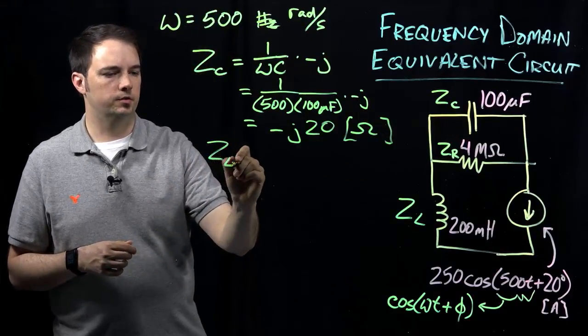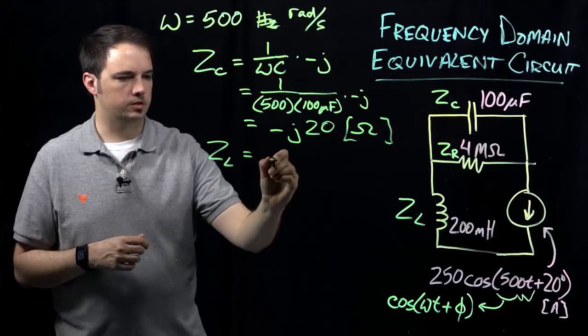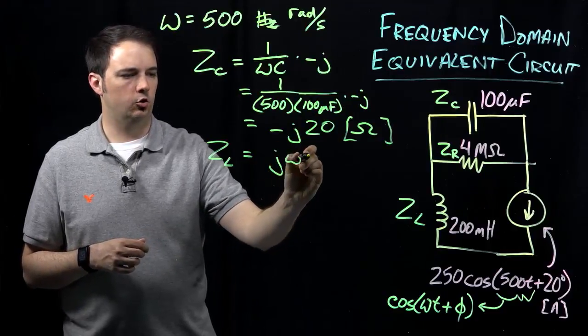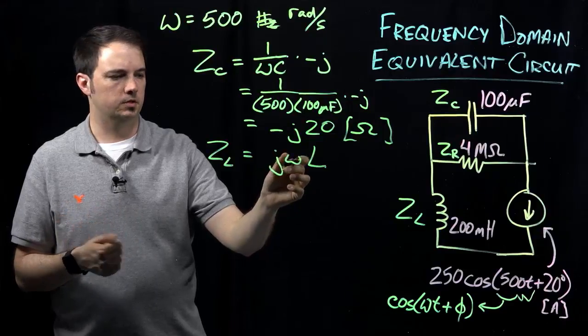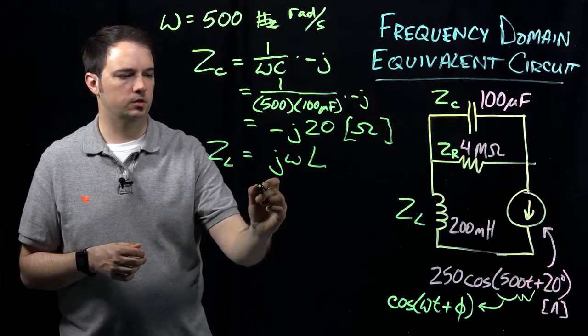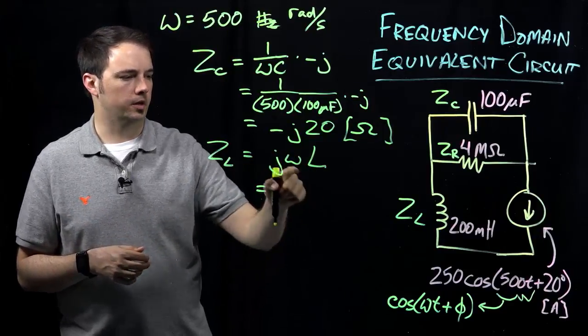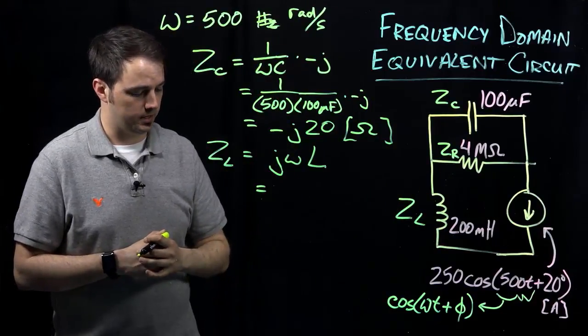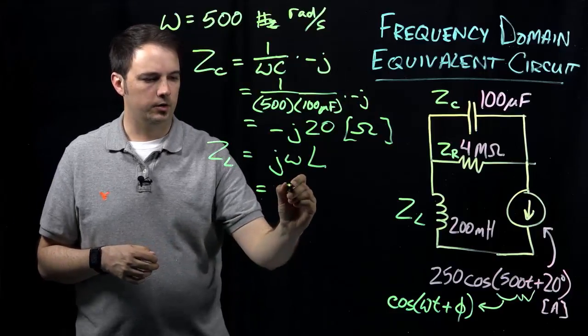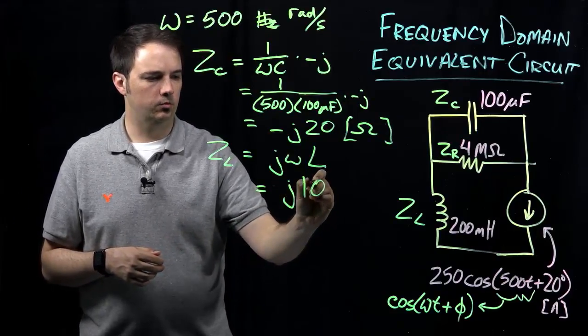So now for the inductor, the impedance of an inductor is given by the expression J omega L. Again, where omega here is the same frequency, and L, of course, is just the inductance. So plugging in, again, 200 millihenries for my inductor here with 500 radians per second for my frequency, I would come up with a quantity here of just J100.